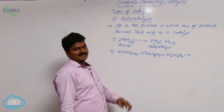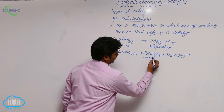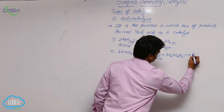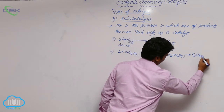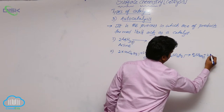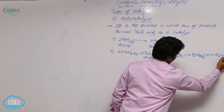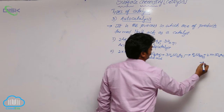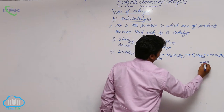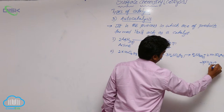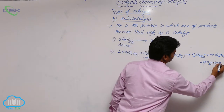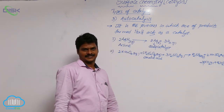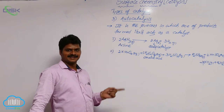In this reaction, oxalic acid acts as the reductant. The products formed are K₂SO₄(aq) plus 2MnSO₄(aq) plus 10CO₂(g) plus 8H₂O(l). This is the balanced equation for a redox reaction in acidic medium.